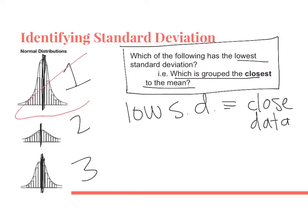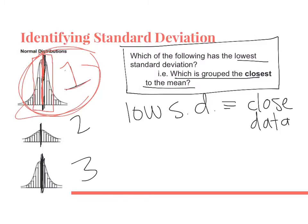If you said number one, that would be the correct answer. All the data is very close to the mean, and that's why the height is so tall. If you imagine pushing all the data in, the only place the curve has to go is up. Whereas in the other distributions, the data is really spread out, which keeps the height really low.